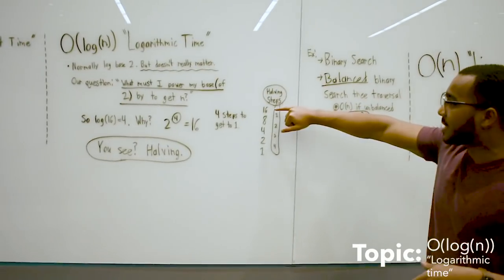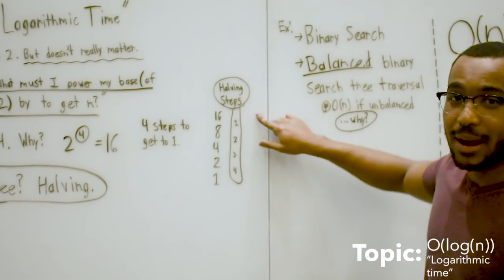That means it takes us 4 steps of halving 16 to get to 1. As you can see here, we take 16, get 8, 4, 2, 1. We see that we're halving.